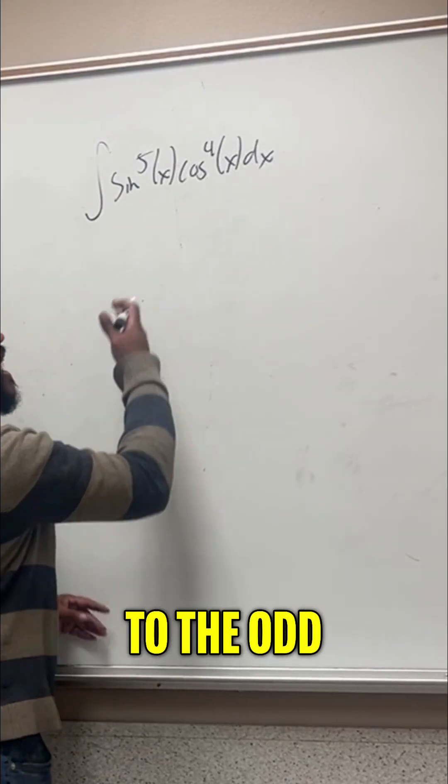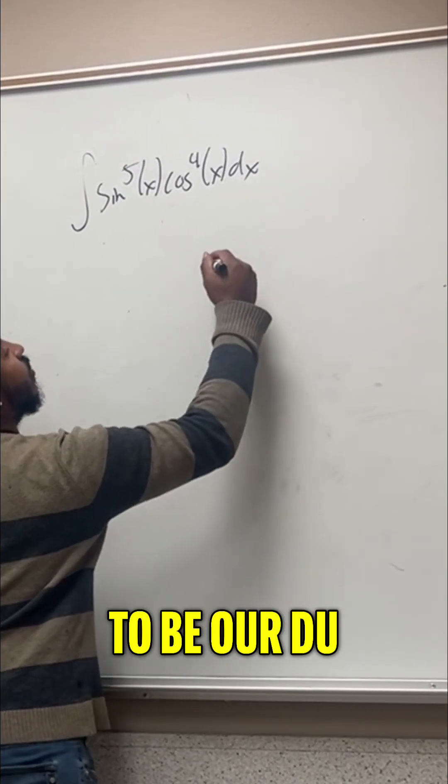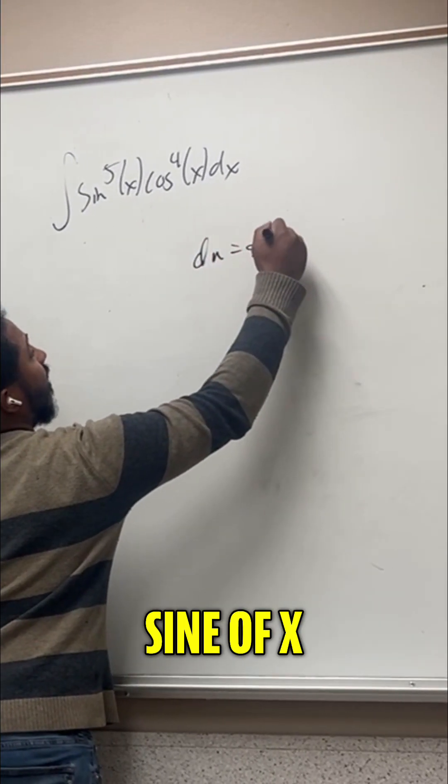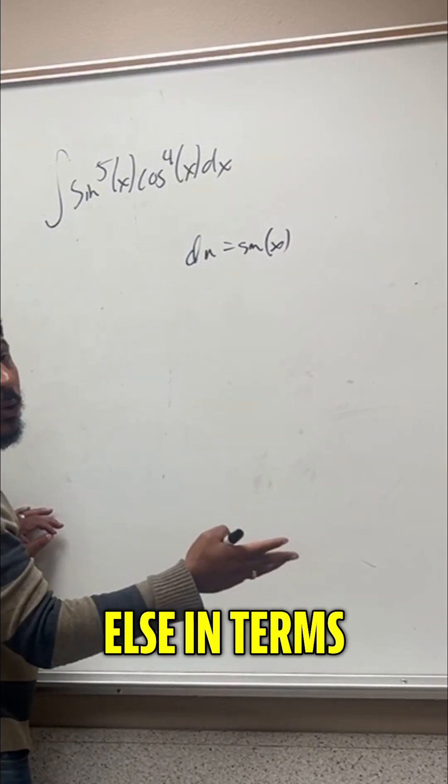So since we have one of the trig functions to the odd power, let's pull that one off to be our du. So let du be the sine of x. We have to write everything else in terms of cosine.